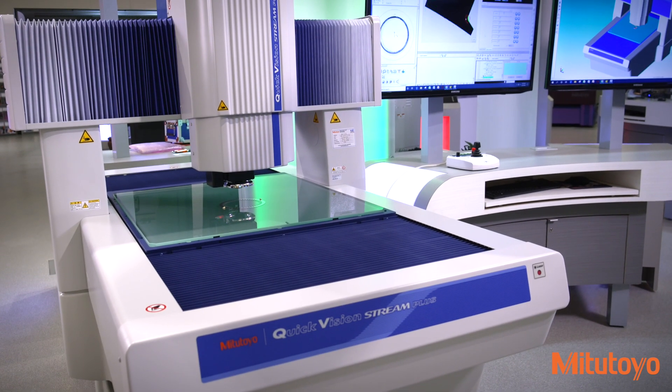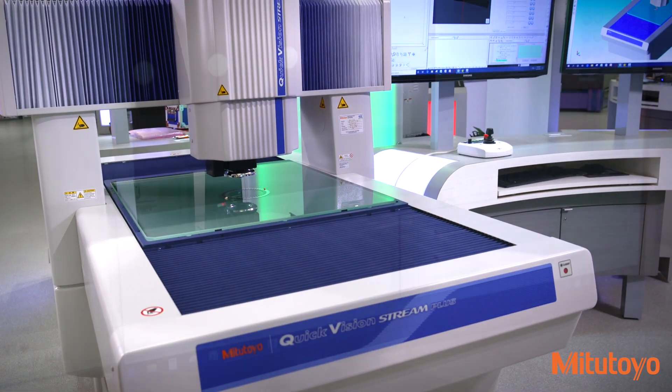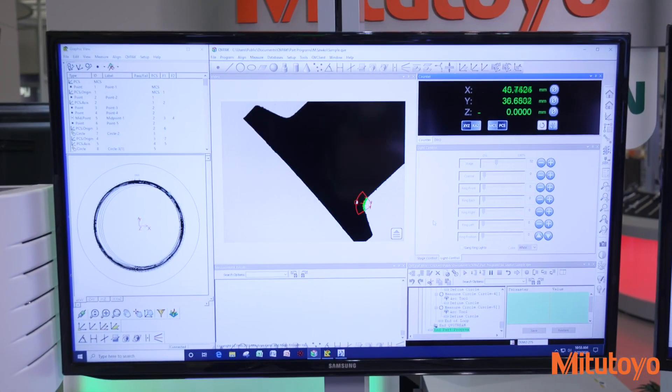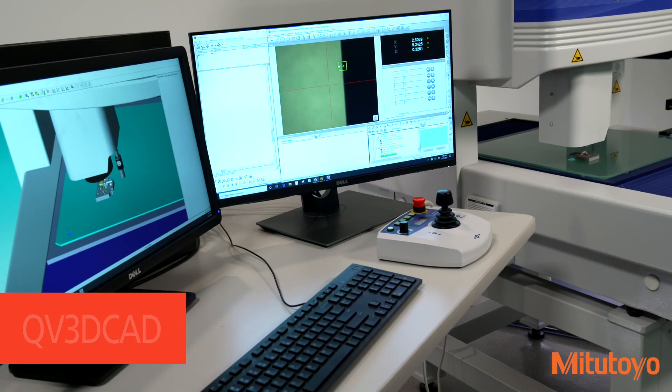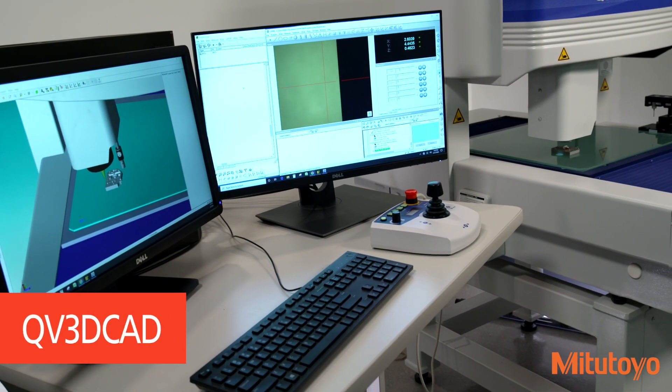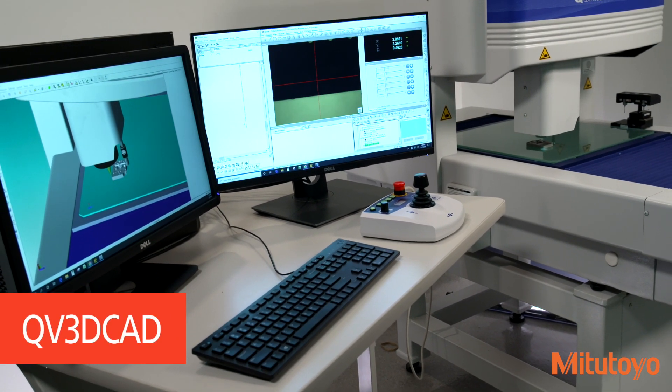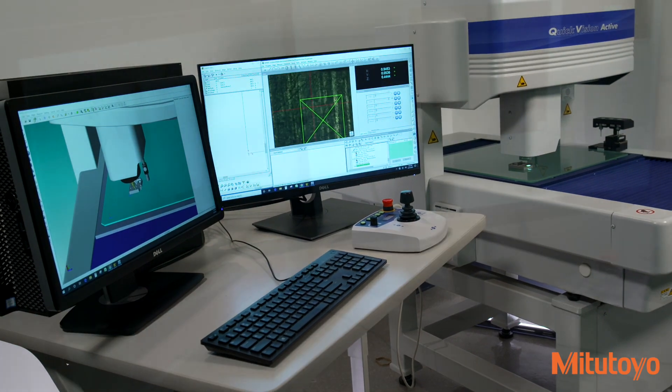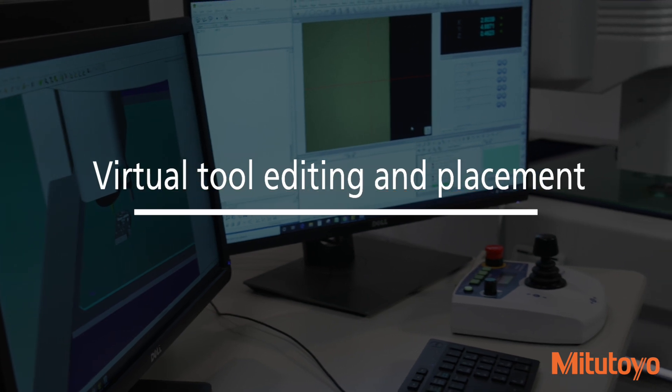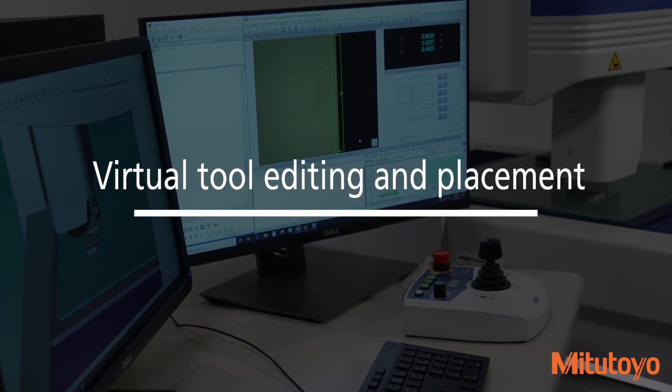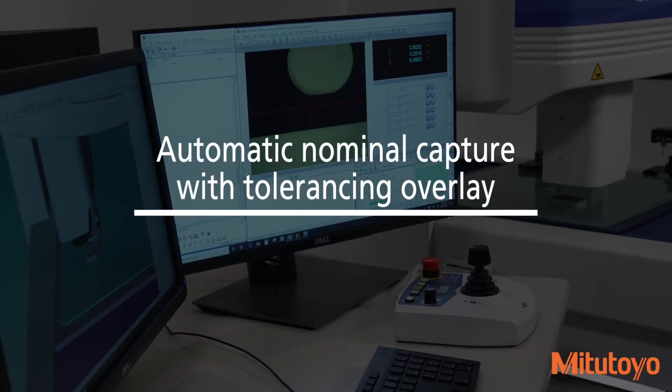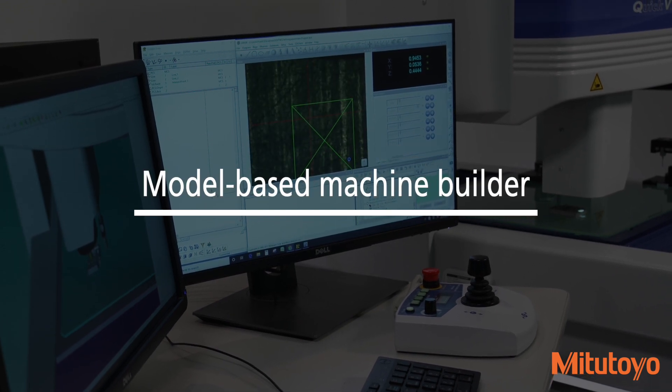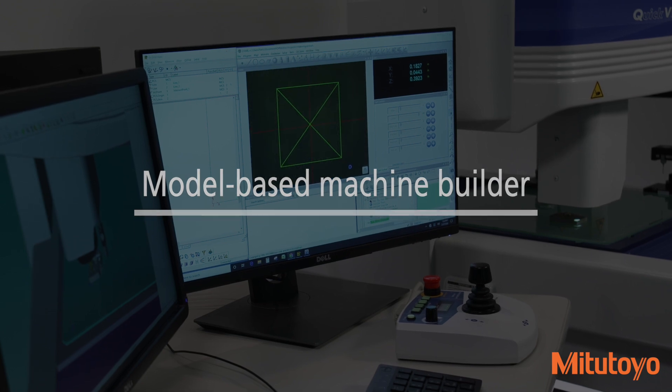Powering Mitsutoyo's quick vision measuring system is innovative software such as QV3DCAD and QVPAC. Mitsutoyo's QV3DCAD model-based programming software simulates part measurement paths for vision, touch, and non-contact sensor probe measurements. QV3DCAD allows for virtual tool editing and placement, automatic nominal capture with tolerancing overlay, measurement display on the graphic model, model-based machine builder for virtual machine setup.